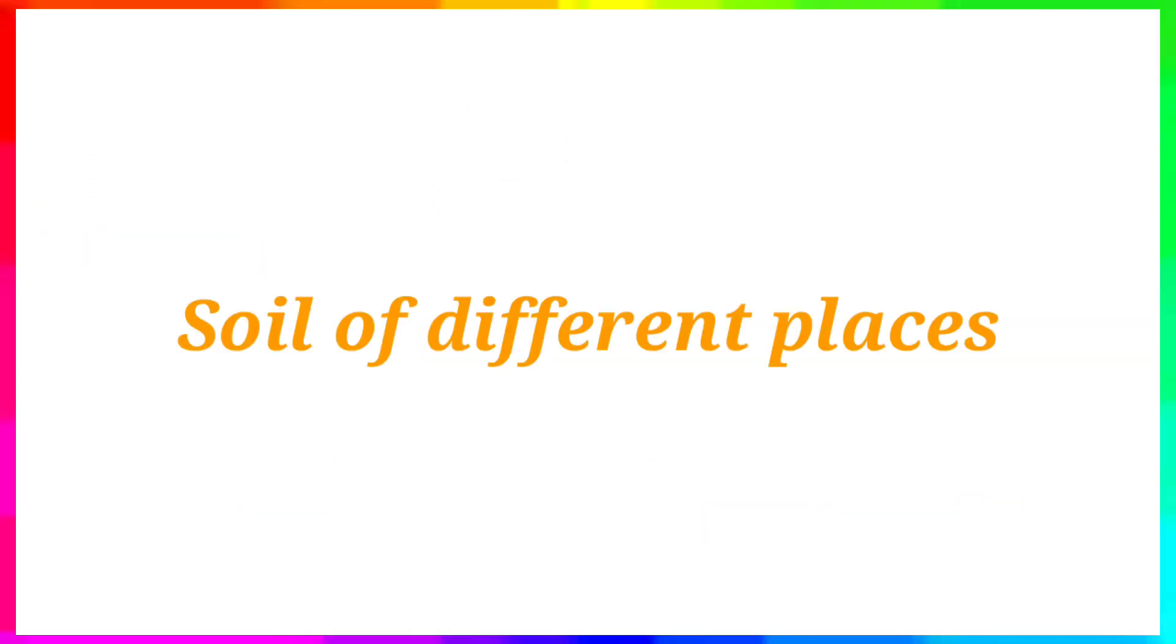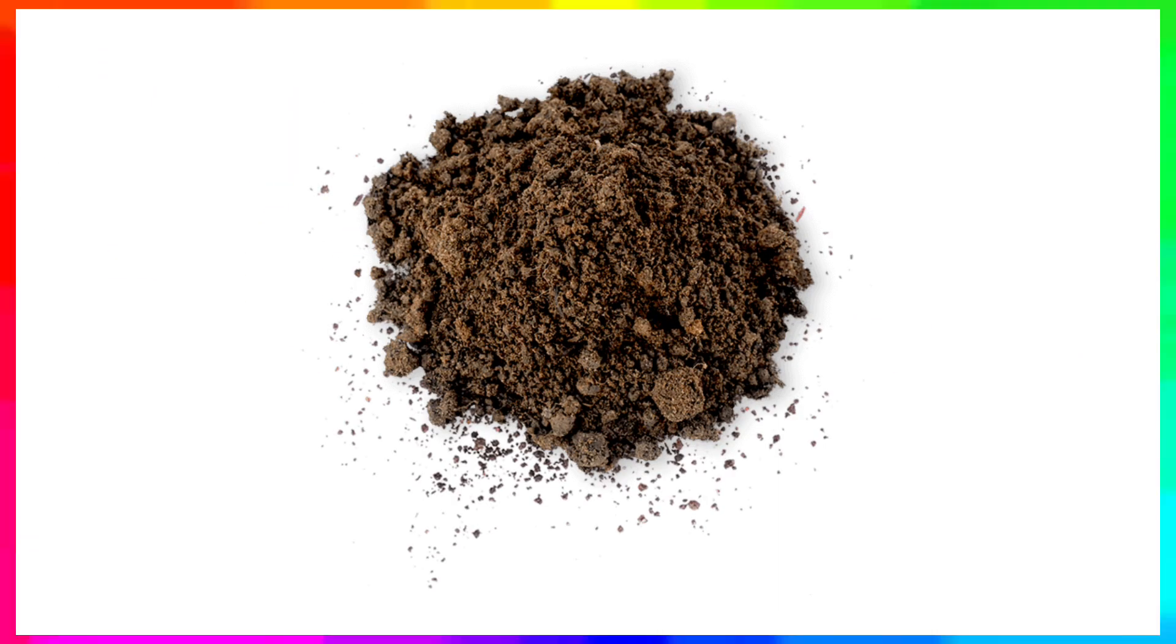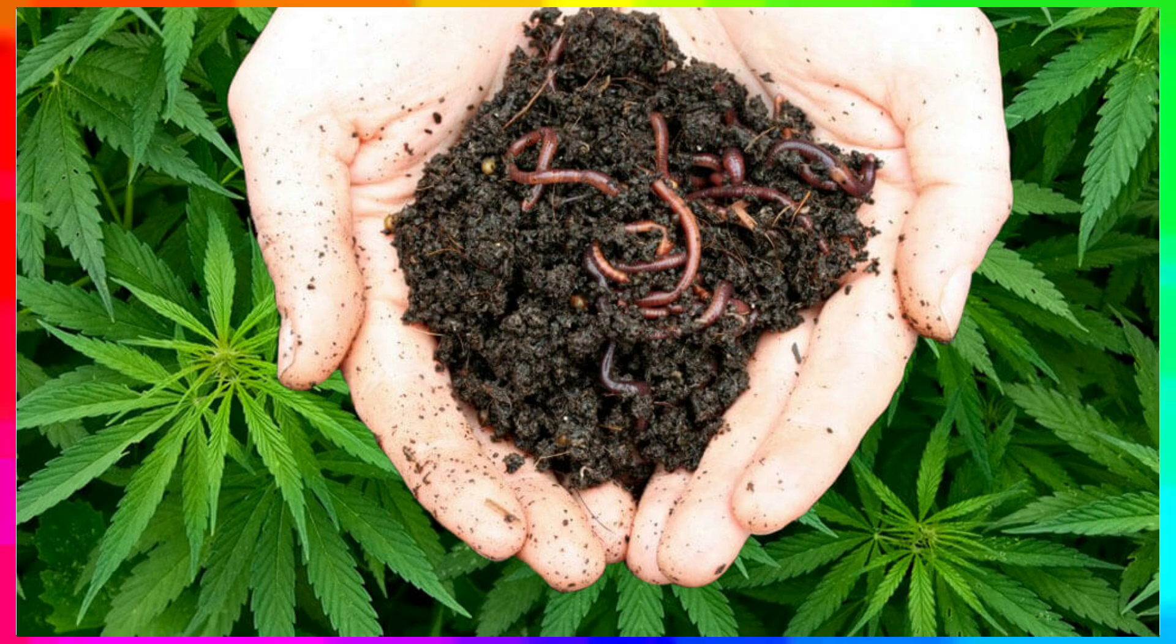Soil of different places on the earth differ from one place to another. Most soil contains humus formed from the remains of dead animals and plants.